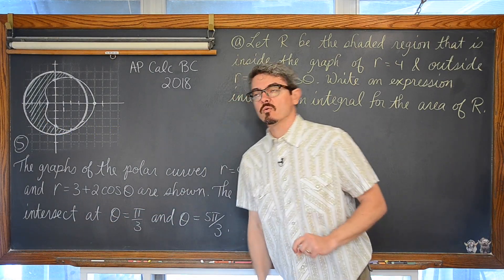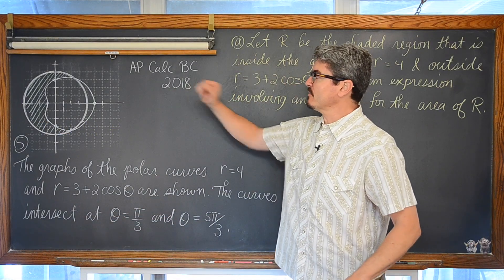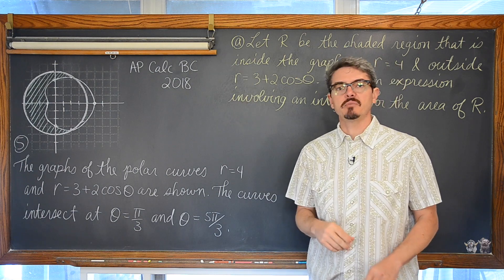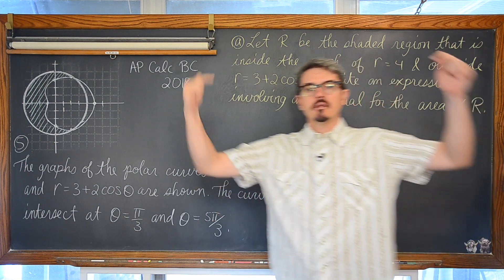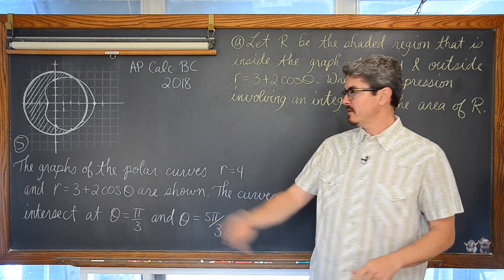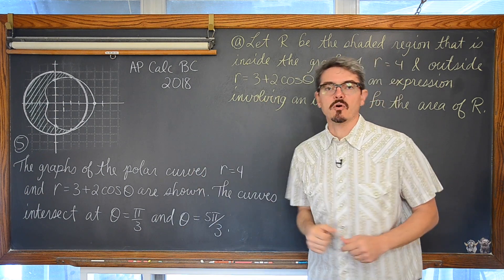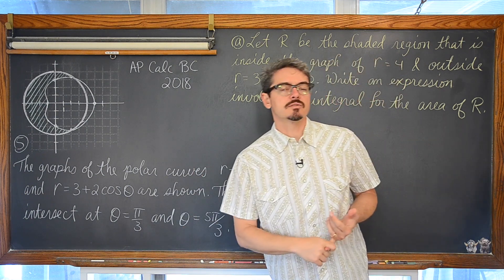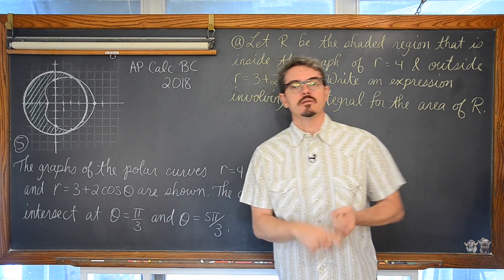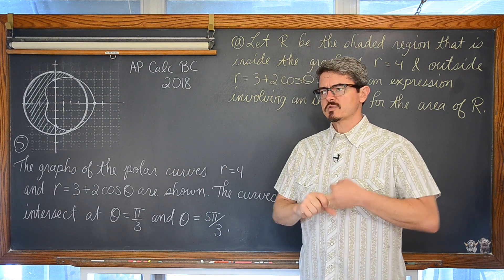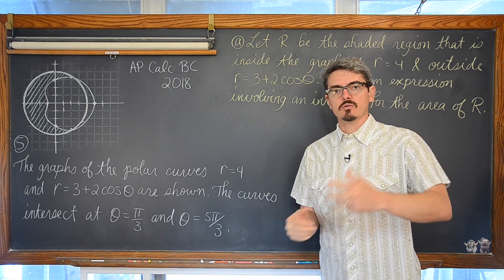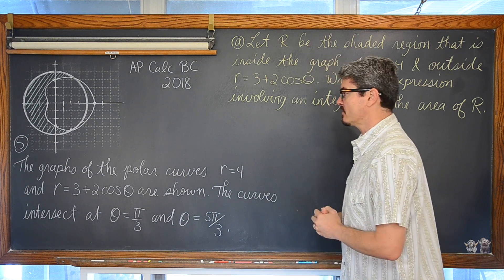Mr. Tarrou. In this video we are going to be taking a look at number 5 from the 2018 AP Calculus BC Test. In the description you will find links to the timestamps that go to each of the three parts of this question. You will also find links to the AP Central website where you can download this PDF, the marking scheme, and the scoring comments from the master graders so you can see where students earned and did not earn their points.